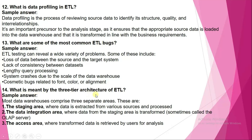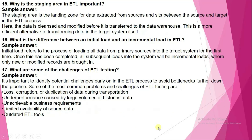What is meant by the three-tier architecture of ETL? Most data warehouses comprise three separate areas: the staging area, where data is extracted from various sources and processed; the data integration area, where data from the staging area is transferred — sometimes called the OLAP server; and the access area, where transformed data is retrieved by users for analysis.